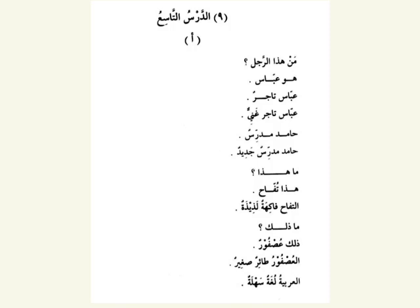Follow along as I read the reading from chapter 9. Man hada? Rajal, huwa Abbasun. Abbasun Tajirun. Abbasun Tajirun Ghaniyun. Hamidun Mudarrisun. Hamidun Mudarrisun Jadidun. Ma hadha? Hadha Tufahun. Et-Tufahu Faqiatun Ladidhatun. Ma dhalika? Dhalika Asforun. El-Asforu Ta'irun Saghirun. Al-Arabiyyatu Lughatun Sahlatun.